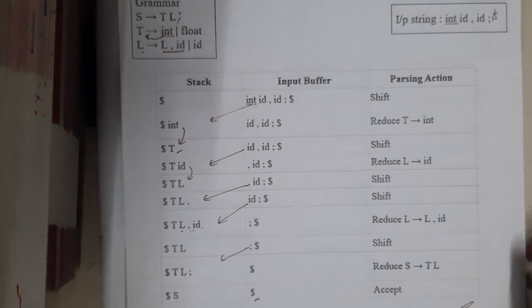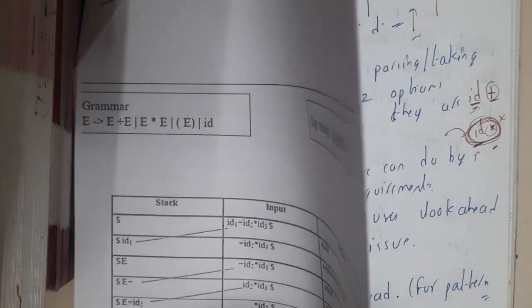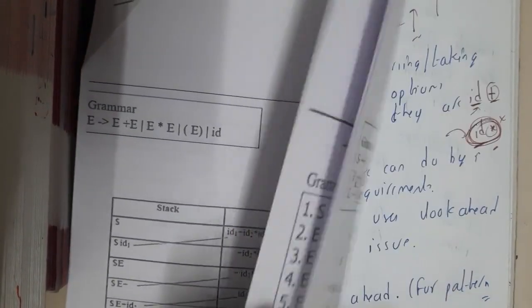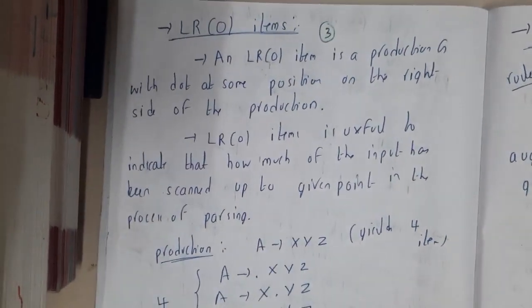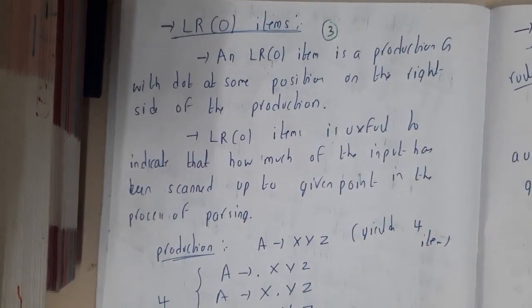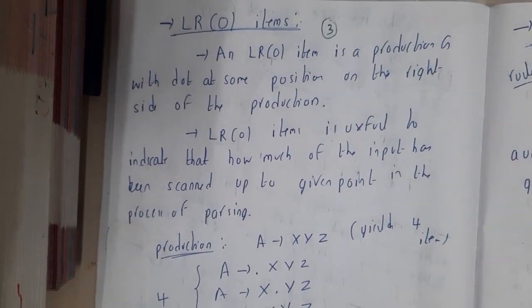I hope everyone got a clear idea on this table method. There are around six to seven examples in the PDF which you can cross-check. In the next lecture, we will be going through LR0 items. Let us meet in the next lecture — thank you for watching.